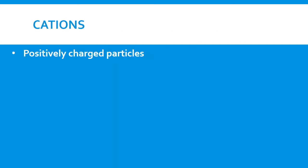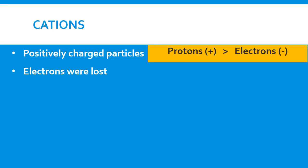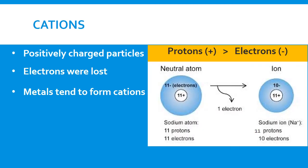Positively charged ions are called cations. That means electrons were lost, because we have more protons than electrons. Metals tend to form cations. A neutral sodium atom has equal numbers of protons and electrons — 11 each.